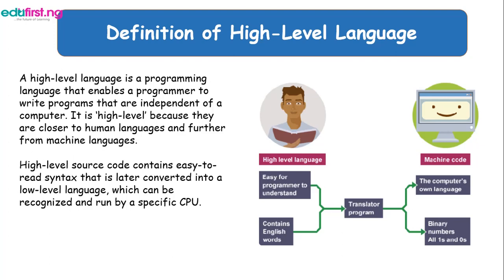If you look at the diagram here, when a high-level language is written by a programmer, a translator converts it into machine code that the computer will be able to understand, which is in ones and zeros.